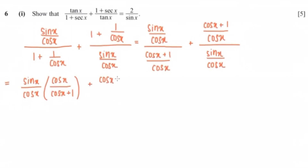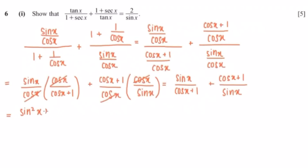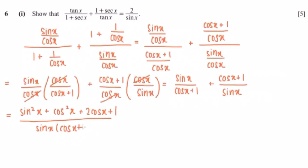Notice how I flipped the fraction. Same thing with the other one — that's cosine x plus 1 over cosine x, multiplied by cosine x over sine x. Now we can simplify by crossing out the cosine x. That gives us sine x over cosine x plus 1, plus cosine x plus 1 over sine x. Now I'm going to make the denominator the same again, giving sine squared x plus cosine x plus 2 cosine x plus 1, all over sine x times cosine x plus 1.